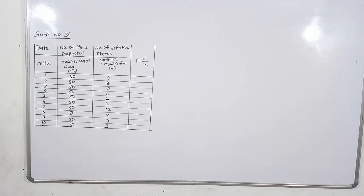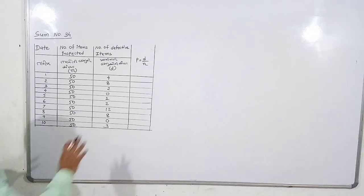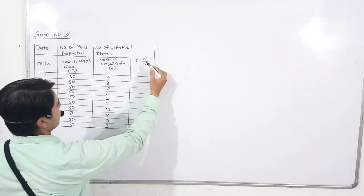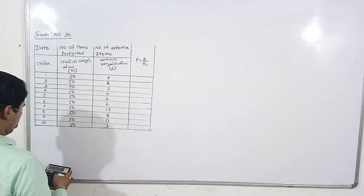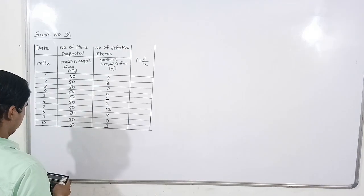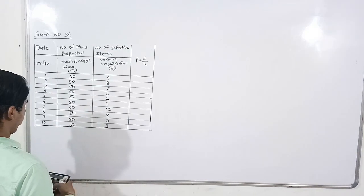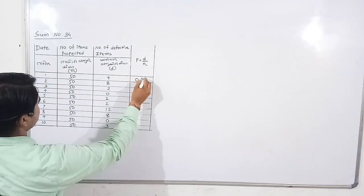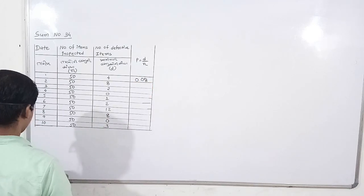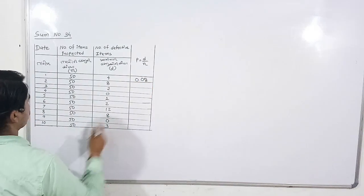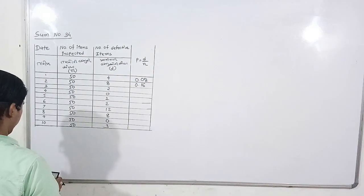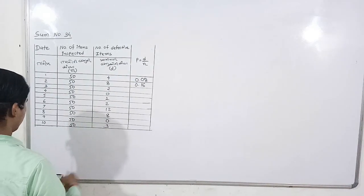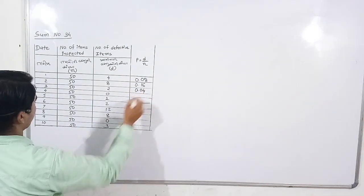Now let's start. First one — formula, always remember: p equals to d upon n. So: 4 divided by 50, answer is 0.08. 8 divided by 50, answer is 0.16. 2 divided by 50, answer is 0.04.